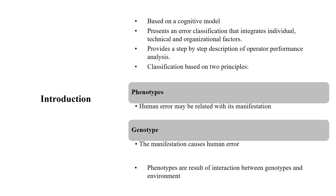CREAM classifies errors into two types: phenotype and genotype. In phenotype, we try to understand human error related to its manifestation. In genotype, a particular manifestation represents the causes of any kind of human error. Both ways, we are trying to understand cause and effect, and we analyze the data available in CREAM. Phenotypes are the results of interaction between the genotypes and the environment.